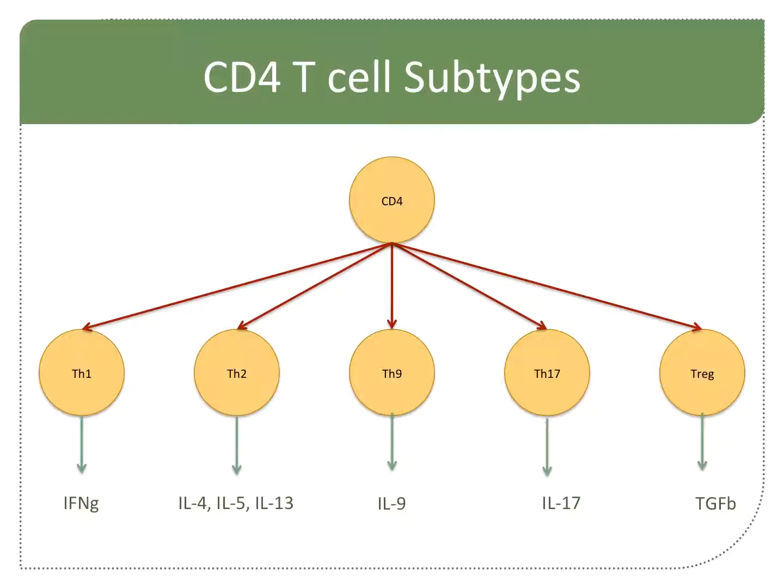Mucus. Mucus production. Interleukin-13 is directly related to your mucus production. Th2 — remember, that's worms, but that's also allergies. Think allergies: your interleukin-13 is the mucus for the allergies.